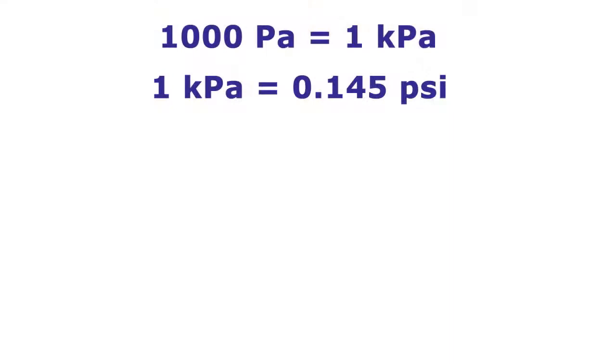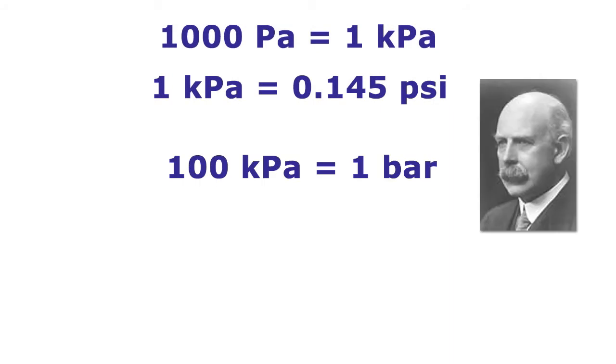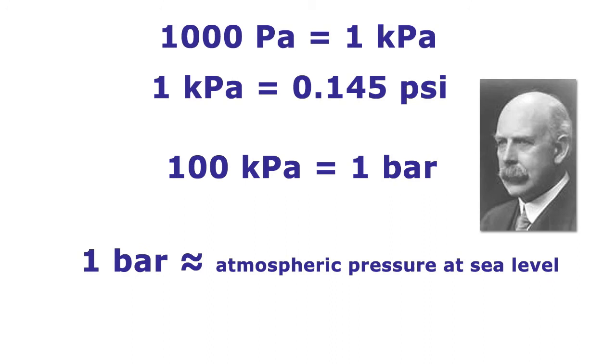The word barometric literally means weight measure, coming from the Greek word baros for weight. This leads us to another unit for pressure, the bar, which was introduced by meteorologist Napier Shaw to describe atmospheric pressure. One bar is roughly equal to air pressure at sea level.